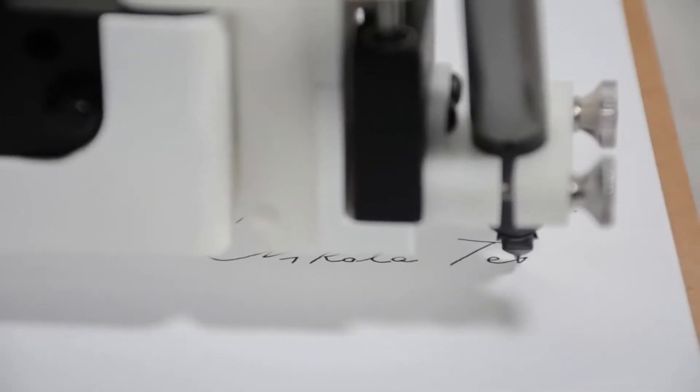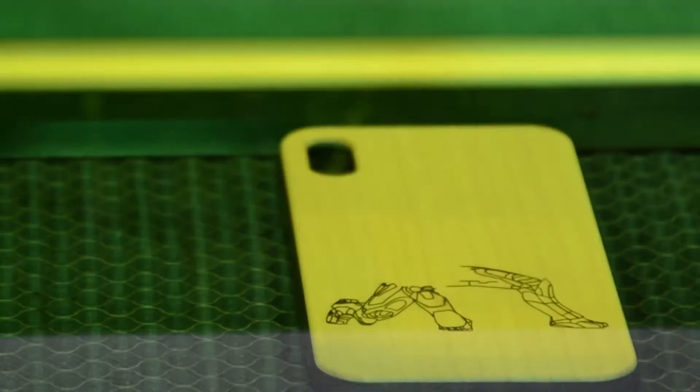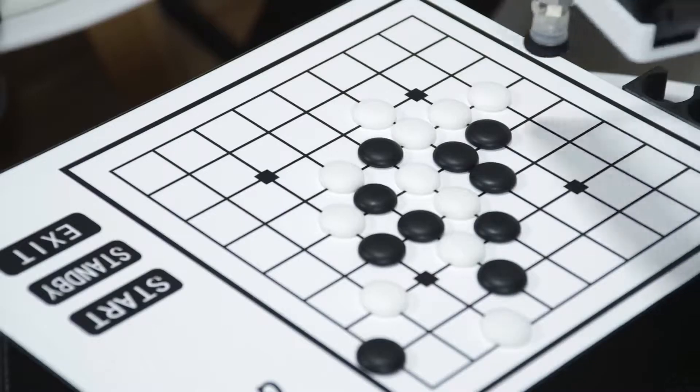Imagine having Iron Man's Jarvis on your desktop that writes your letters, draws your pictures, laser engraves your phone case and plays chess with you.